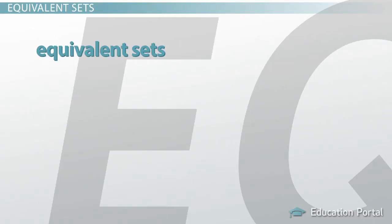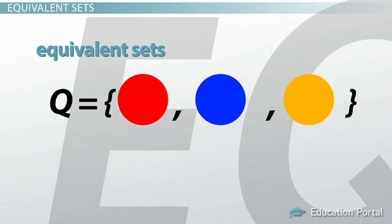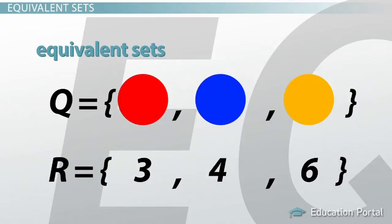Equivalent sets are those that have the same cardinality, or number of elements. Let's say set Q = {red, blue, orange} and set R = {3, 4, 6}. We can say set Q is equivalent to set R because they both have a cardinality of three — they both have three elements. Equivalent doesn't mean they have to be the same elements.